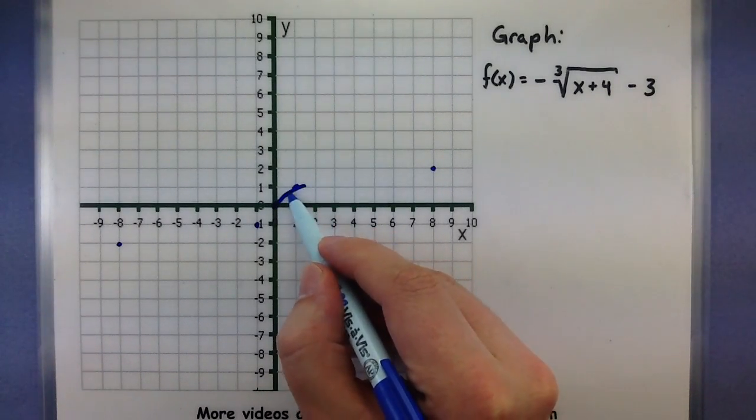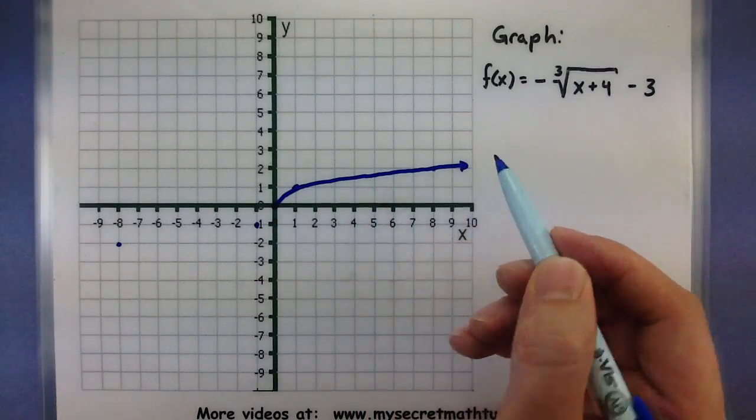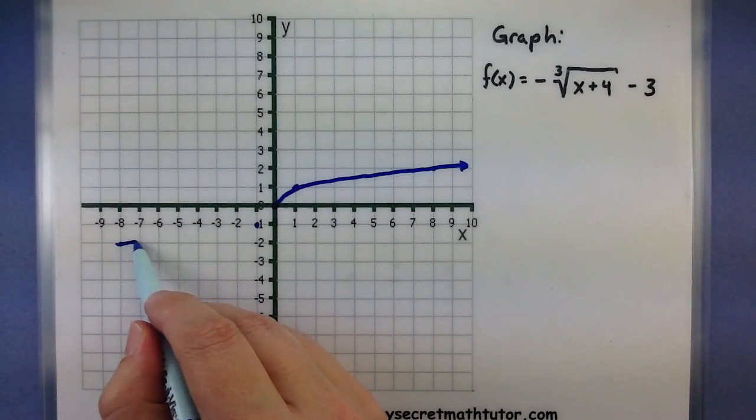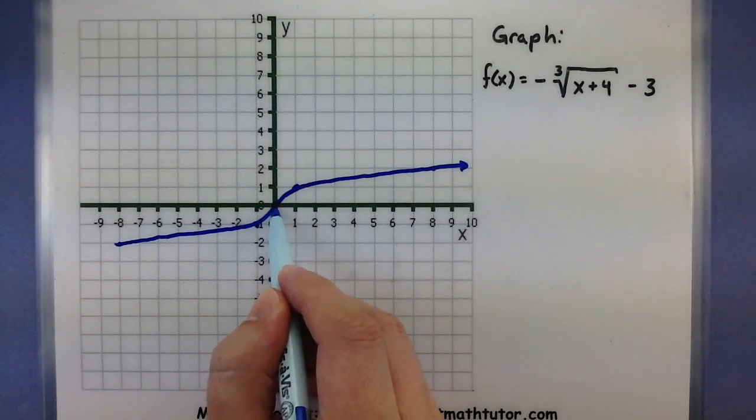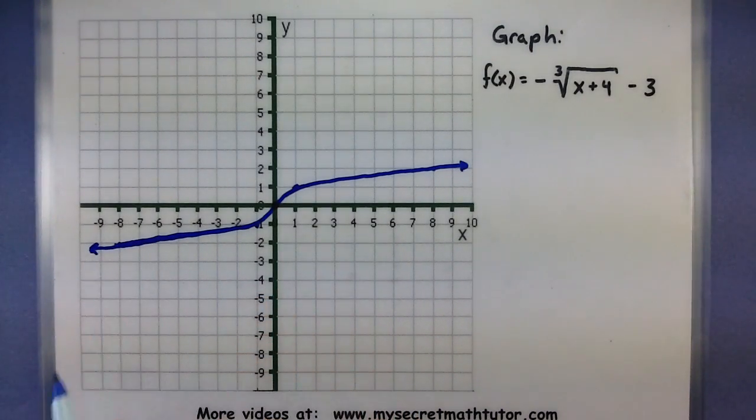So you can see it is much more shallow than the square root. And this one actually goes in both directions. Let me carefully draw that guy in there, there we go. So there's our original.